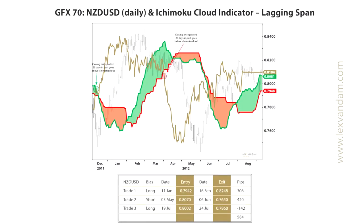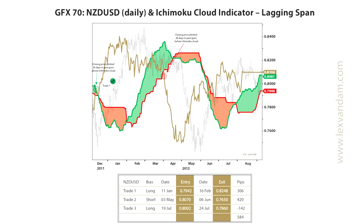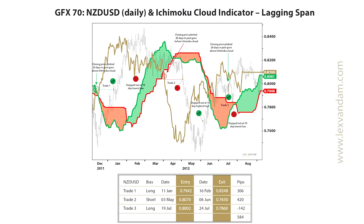Whenever the lagging span crosses above or below the cloud, a trade can be initiated. In this example you can see that three trades are executed. The first trade would have been initiated at the first green circle, because the closing price of that day, plotted 26 days into the past as indicated by the horizontal green line, broke through the cloud at that point. I used a 10-day low as a trailing stop, and this trade was indeed stopped out in February at the first red circle because the price broke through the 10-day low. The following trade was a short initiated in May, where you can see the red arrow, and was stopped out at the 10-day high on June 6th. The last trade went long in July and was stopped out at a loss at the 10-day low shortly afterwards. In total, over 500 pips were made.